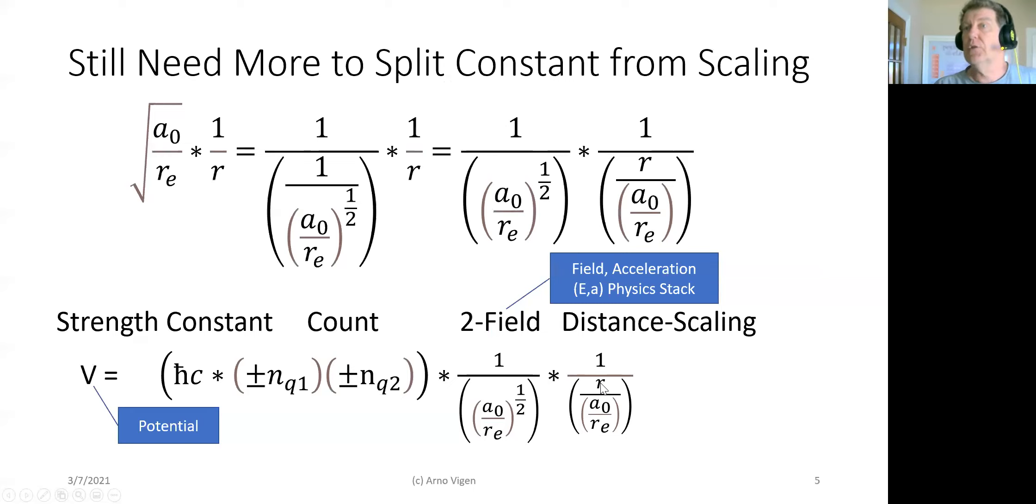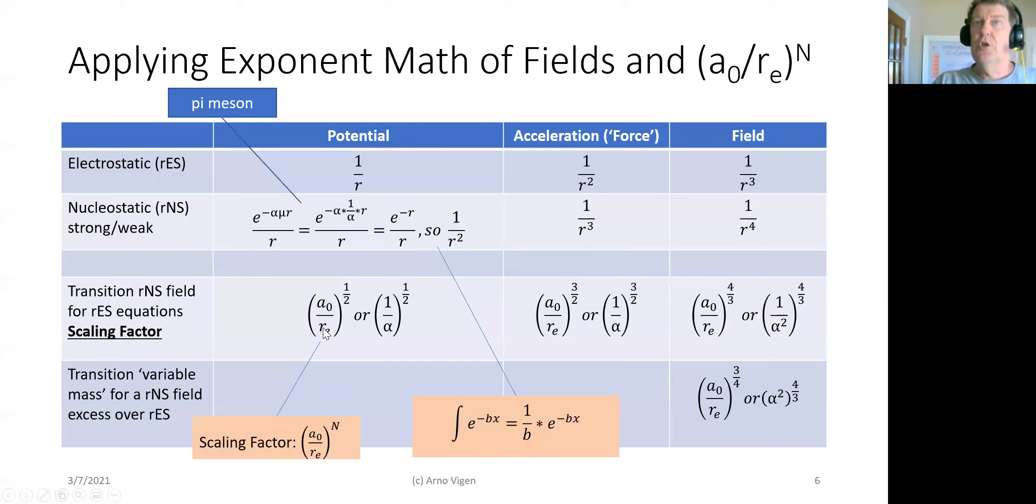So, every equation that you do in the field acceleration physics stack is based upon strength constant, counts, number of particles, quantization, which will become even more important when you get to statistical mechanics or what they call quantum theory. And then, you're going to have that distance scaling because that's how you're going to change where you are relative to that constant. So, your distance is not just meters, which is an arbitrary length, but the length in the count of units that the fields universally in the universe change at. But then, you have this two field. That's the net actually of the two, which I'll explain next.